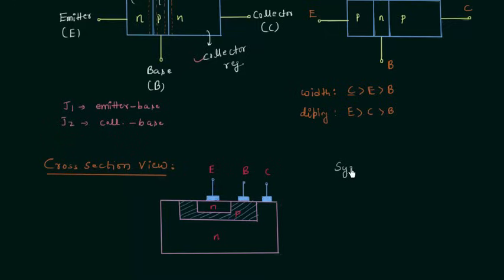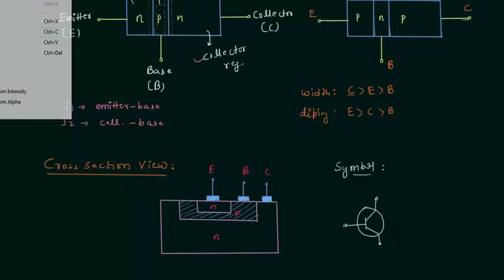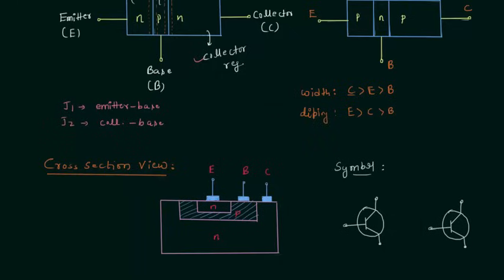The next thing is the symbol of the transistor. We represent the transistor by a circle in which the vertical line represents the base — this is the base terminal. One line represents the emitter and the other line represents the collector. This is the emitter terminal and this is the collector terminal. We have two similar symbols, one for NPN transistor and one for PNP transistor, and we differentiate them by marking the direction of current.